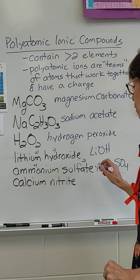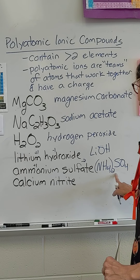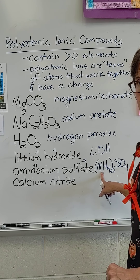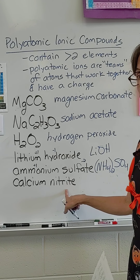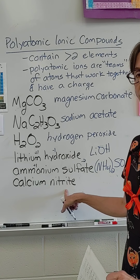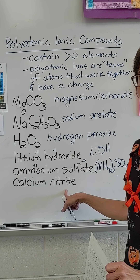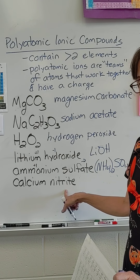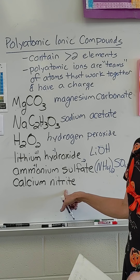Hey everybody, so today we're going to talk about how to name polyatomic ionic compounds and how to write formulas for them. The thing you need to know is that polyatomic ionic compounds contain more than two elements — that's the major way you identify them. Anytime you see three or more elements, you should immediately recognize it as a polyatomic ion and take out your polyatomic ionic table. Polyatomic ions are teams of atoms — they move together, work together, and all share one single charge.